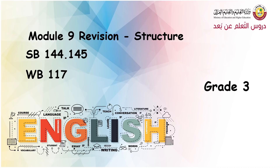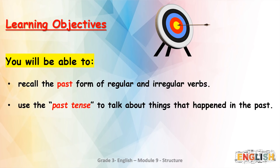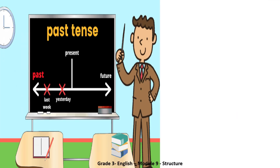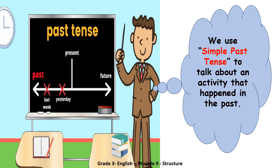Hello everyone, today we will revise the grammar section from Module 9. After watching this video, you will be able to recall the past form of regular and irregular verbs and use the past tense to talk about states that happened in the past. Do you remember when to use the past simple tense? We use it to talk about an activity that happened in the past, like last week and yesterday.